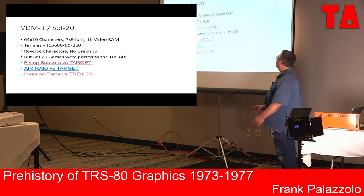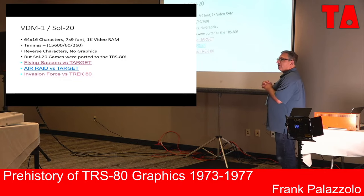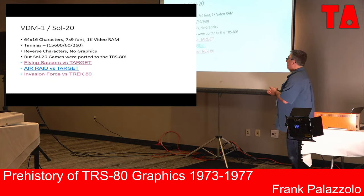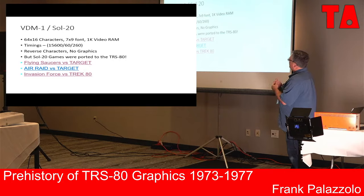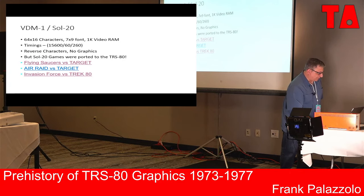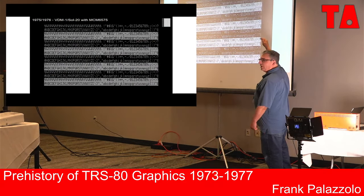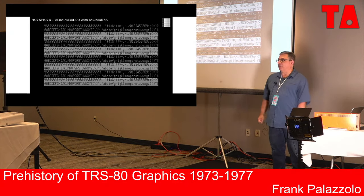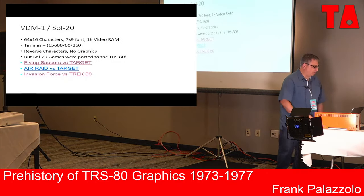In retrospect, the VDM1/Sol-20 had 64 by 16 characters, a 7 by 9 font — really fancy for that machine. It used 1K of video RAM — that seems like a common pattern. It had slightly different timings, ending up with 260 scan lines instead of 264. That font used reverse characters, using half the font set to give a reverse version of the other half. Reverse characters are nice but they double the size of characters you're going to use, so there wasn't room to do much else.